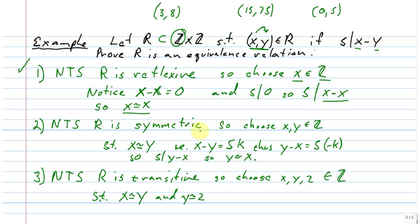Now we show it is symmetric. We choose x and y in ℤ such that x is related to y — meaning x minus y is divisible by five, so x minus y = 5k for some k in ℤ. Then y minus x = 5(−k), which means y minus x is also divisible by five. So five divides y minus x, meaning y is related to x. Thus x being related to y forces y to be related to x, giving us symmetry.